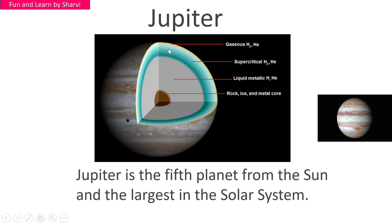You can see here Jupiter's internal structure: the gaseous state, supercritical state, liquid metallic layer, and a rock, ice, and metallic core at the center.